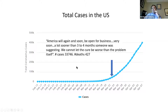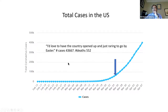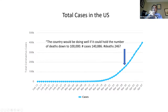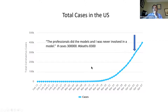'America will again and soon be open for business — very soon, a lot sooner than three to four months someone was suggesting. You cannot let the cure be worse than the problem.' Of course the problem back then was quite a bit less than today. 'I'd love to have the country opened up and just raring to go by Easter' — Easter is coming up this weekend, and I don't think that's going to happen. 'I don't believe you need 40,000 or 30,000 ventilators. You go into major hospitals sometimes they'll have two ventilators, and now all of a sudden they're saying can we order 30,000 ventilators.' Not really facing up to reality. 'The country would be doing well if it could hold the number of deaths down to 100,000.'